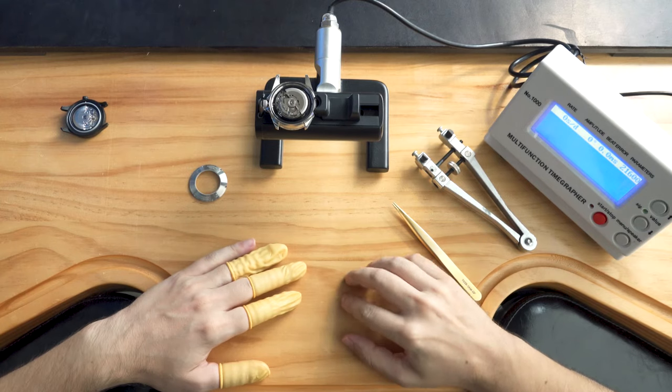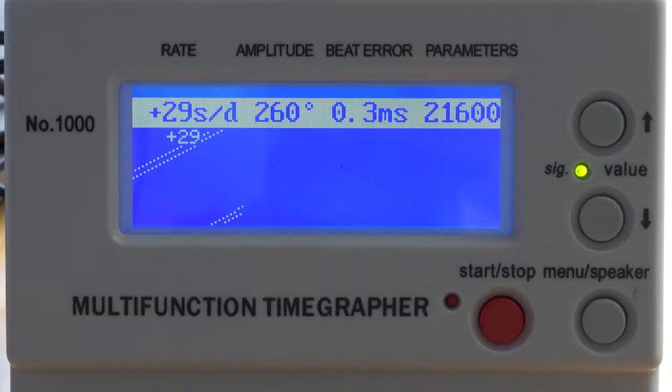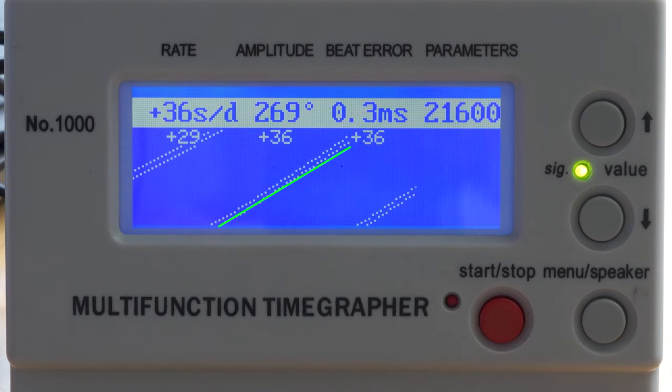Now the time grapher starts outputting a stream of readings. The first on the left is rate, in seconds per day. This indicates how fast or slow your watch is. This is the number we'll focus on for this video. The slope of this line shows the same measurement. So for this watch, it's running at around 30 seconds fast per day.